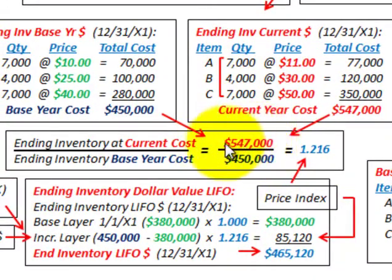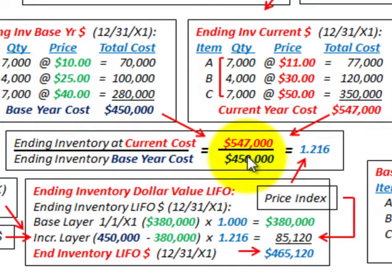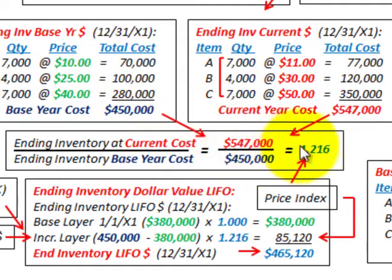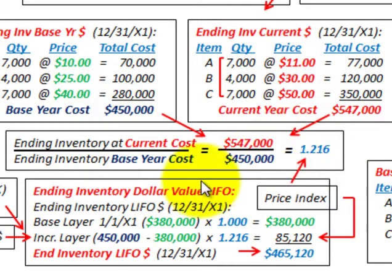Now we determine our price index. We take the ending inventory at current year cost of $547,000 and divide by the ending inventory at base year cost of $450,000. This gives a price index of 1.216. This represents the inflation or increase in value of a unit of inventory from the base year to the end of the current year.